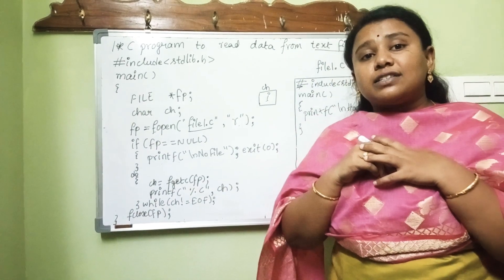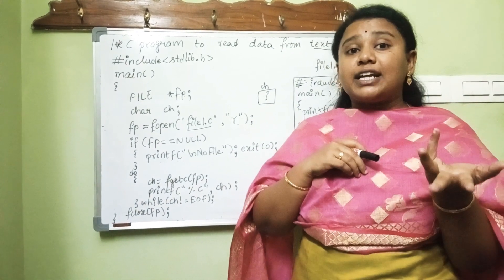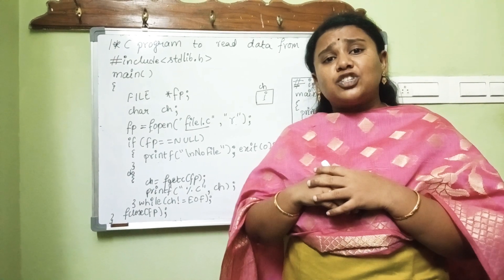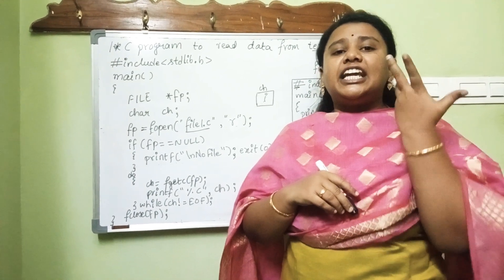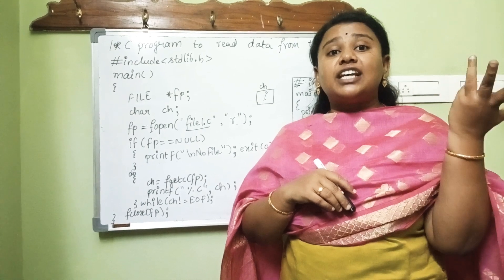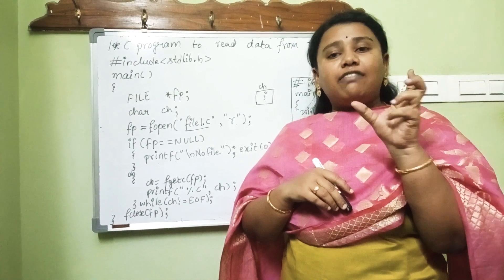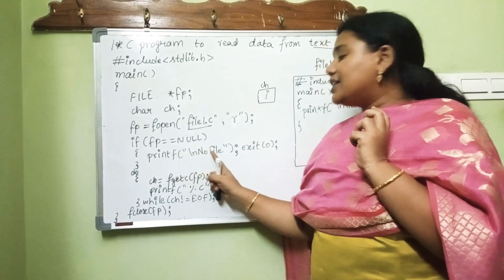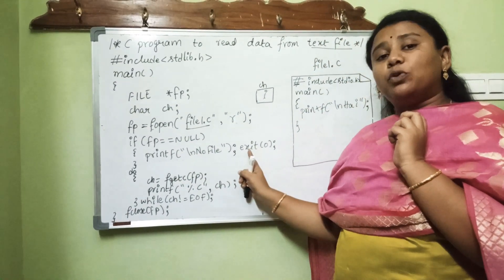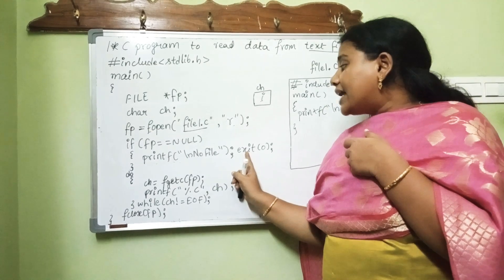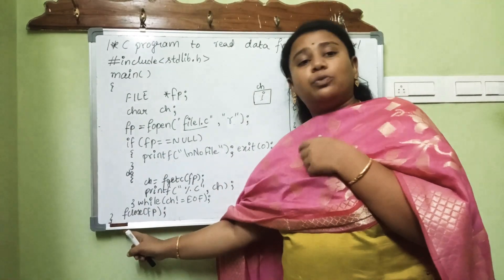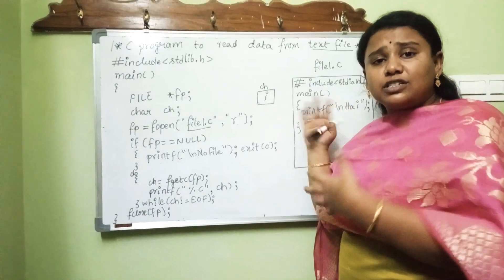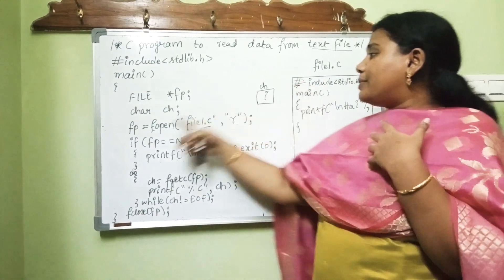In some cases the file may not exist — the file we are trying to read may not exist due to many factors. In such cases we do not get any address back; it will return a null value. So if fp equals null, there is no file and we exit the program. The exit function leads to outside of the program and nothing further will be executed.